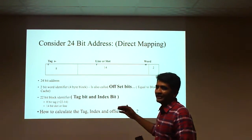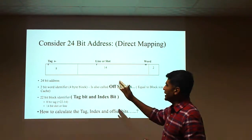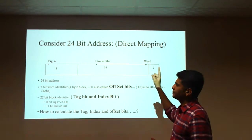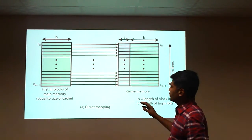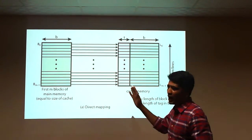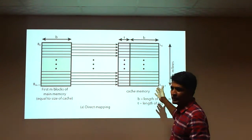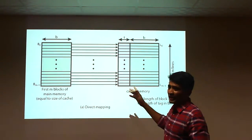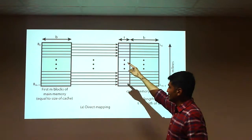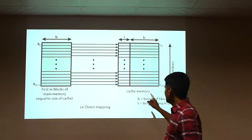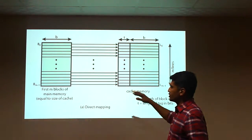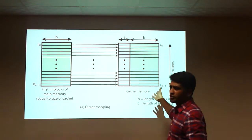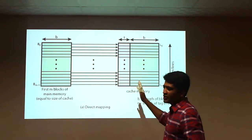The block identifier combination indicates which block contains the particular word in memory. This is how bits are placed in the logical address — tag, index, and offset. The slide also shows how main memory is mapped to cache memory, where m-1 blocks exist in both main memory and cache memory, so there is no deviation.